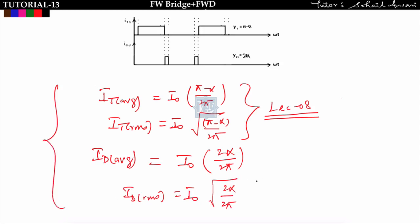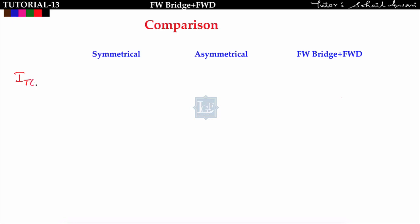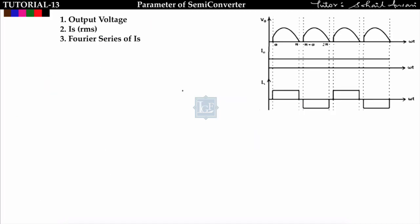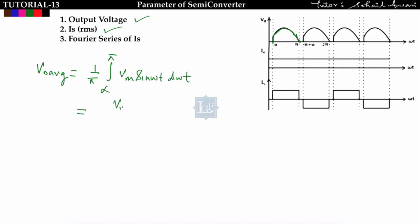Let us summarize: we find IT_average, IT_rms, ID_average, and ID_rms for all types of semi-converters — symmetrical, asymmetrical, and full-bridge rectifier with freewheeling diode. Note down this table. As mentioned earlier, in all semi-converters the output voltage waveform and source waveform are the same. The average output voltage V0_average is found from alpha to pi over a period of π: (1/π)∫[α to π] Vm·sin(ωt)·d(ωt) = (Vm/π)(1 + cos α).